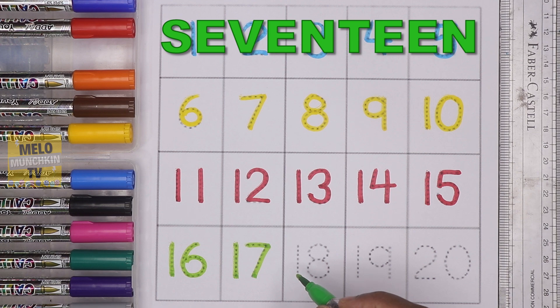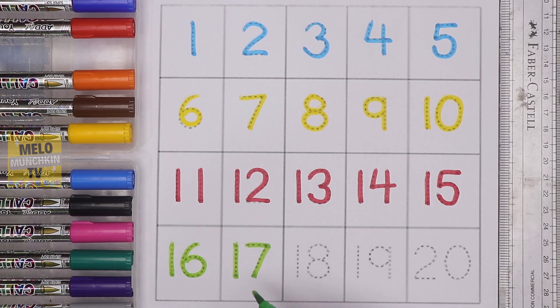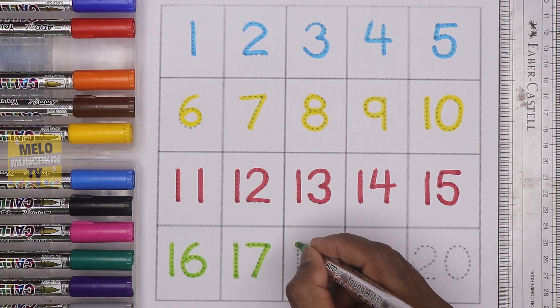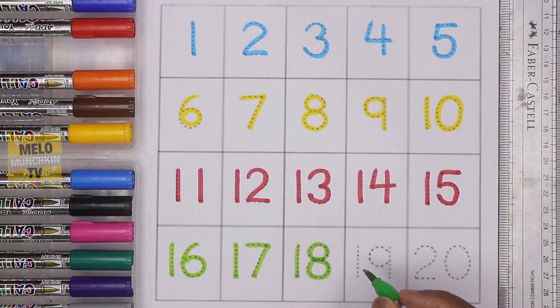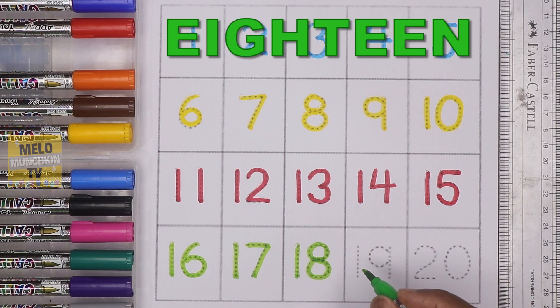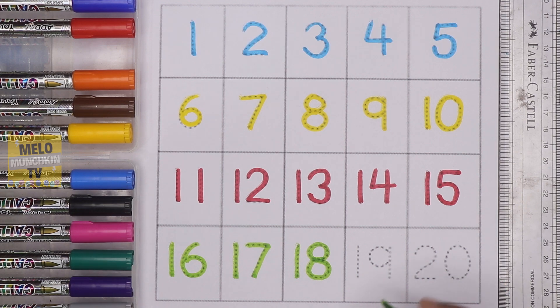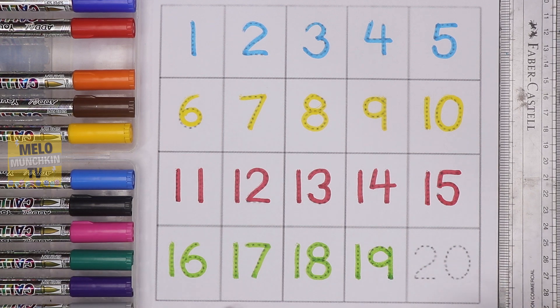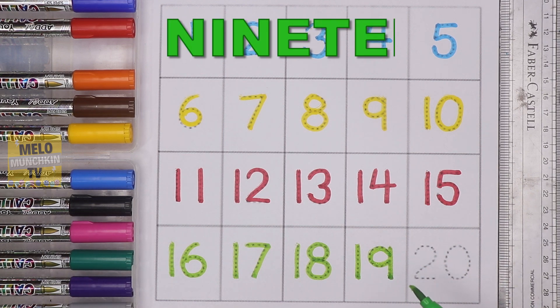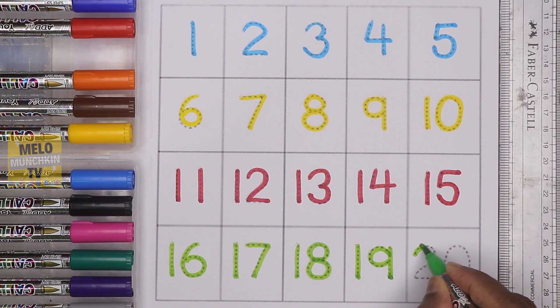After 17 it is 18, one-eight, 18. The spelling is E-I-G-H-T-E-E-N, 18. After 18 it is 19, one-nine, 19. The spelling is N-I-N-E-T-E-E-N, 19.